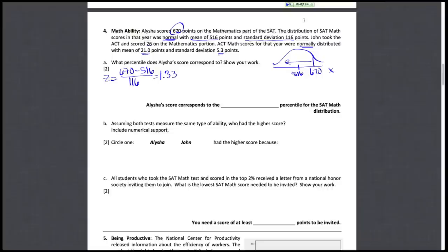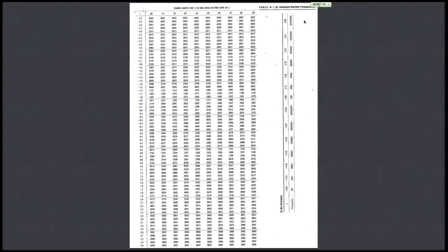So on the standardized scale, if we thought about that scale, this is at 1.33 and we want the area to the left under this normal curve. So I need to go back to my formula card and take a look at the normal distribution card, table A1.